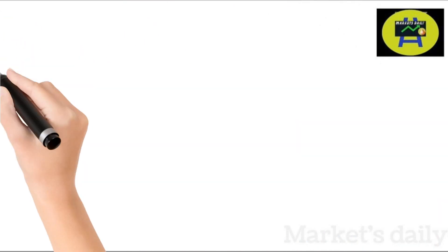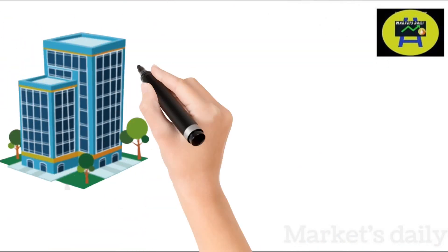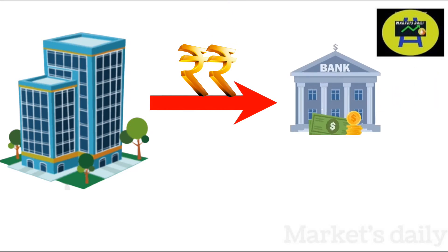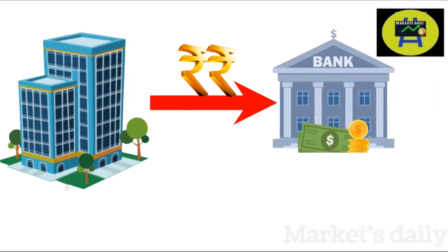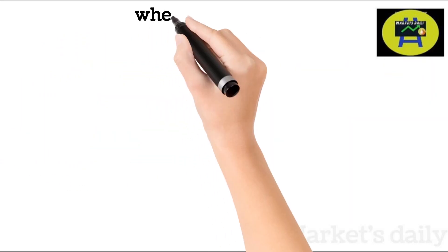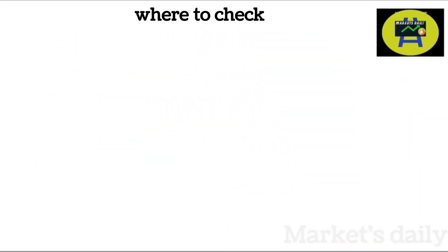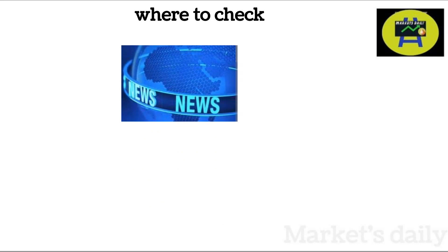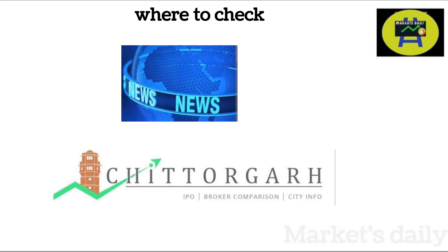How does the company transfer the money to you if you have taken part in the buyback? If you are part of the buyback, then the payment is made directly to your bank account. Keep in mind, the payment will never be done to your trading account. Now, where to check for upcoming buyback announcements? We can see them through news channels, but here I will show you a website named Jithagor, where we can see all the buyback-related announcements.